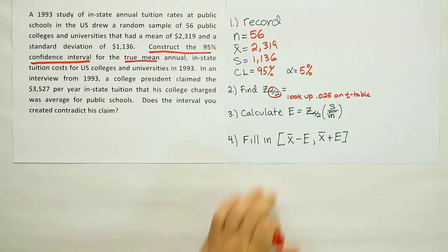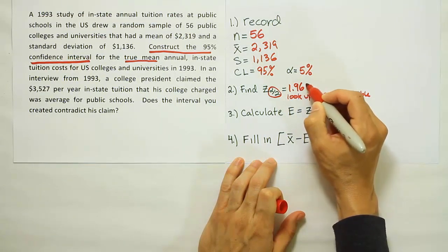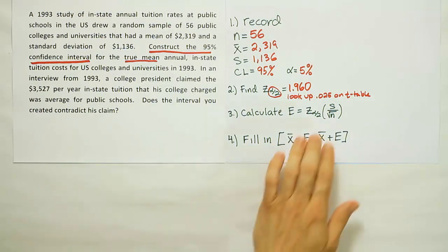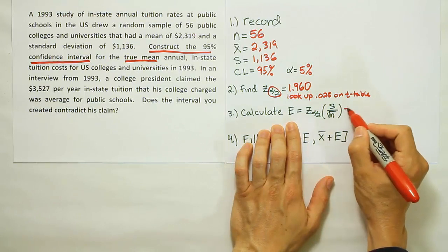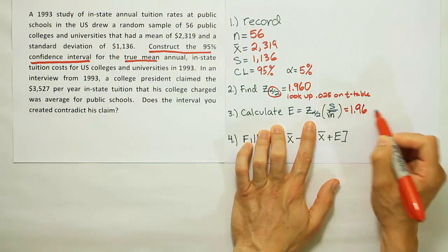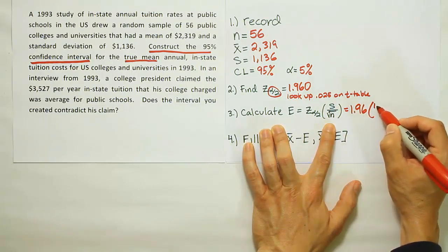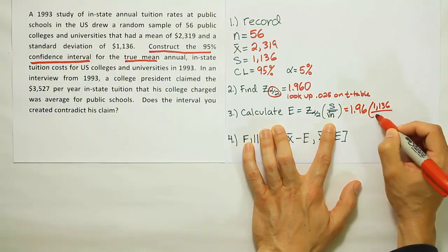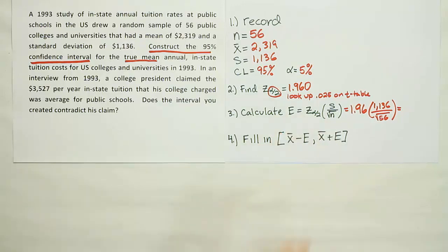Now we found that our critical Z value is 1.960. Our next step is to calculate the margin of error. Calculating the margin of error is pretty easy now because we have all these items that we need to fill in the formula. The Z critical value is 1.96, we're going to multiply by S, which is 1,136, and divide that by the square root of 56. That's our N. Then we'll come up with a calculation for error.